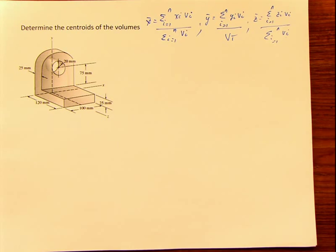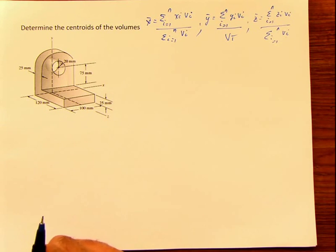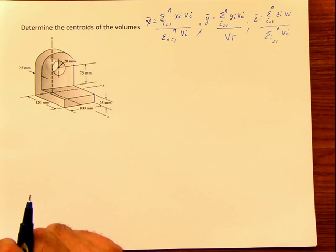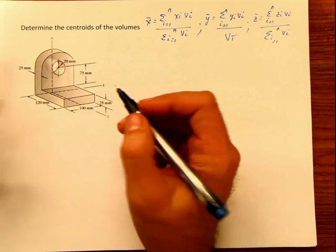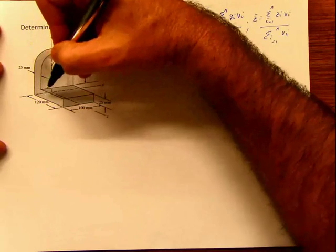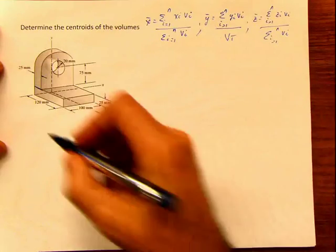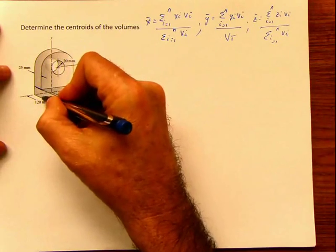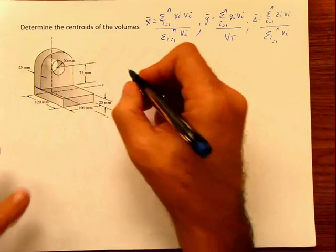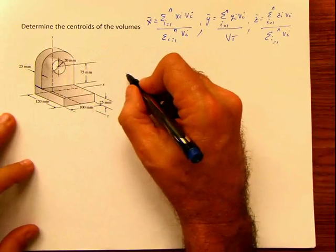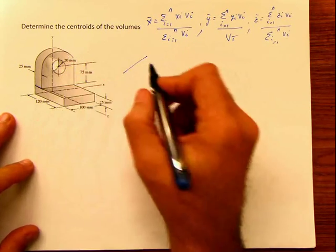The next thing we have to do is separate this shape into pieces — separate it into parts. There are several ways you can do that. I'm going to divide it the way I'll show. So basically what we have is one, two, three, four figures.